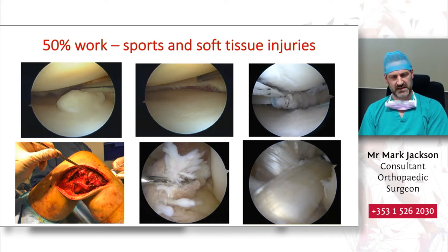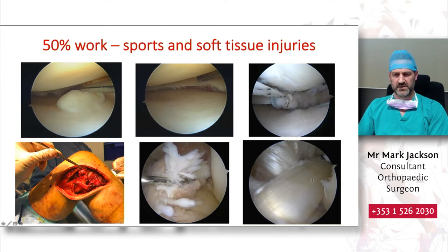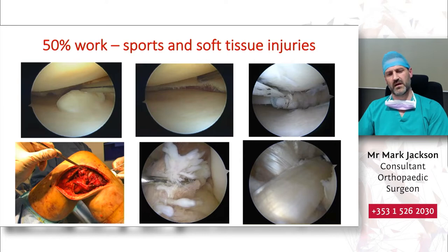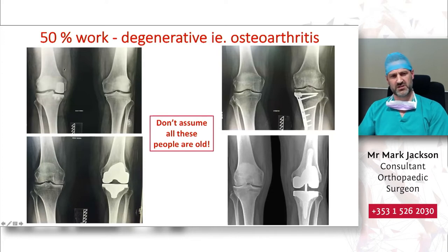The top three pictures here are with a camera in the knee, looking at cartilage problems. The bottom right and middle pictures are actually a cruciate ligament tear — this is a torn cruciate ligament with a probe on it, and this is after we've cleaned it out and put a new cruciate ligament in place. The bottom left picture is a more complicated reconstruction of many ligaments in the knee, such as we unfortunately sometimes see with knee dislocations. The other half of the work is more degenerative in nature — osteoarthritis — involving procedures such as half or partial knee replacements, a full knee replacement, more complex revision total knee replacements, and other procedures such as an osteotomy.